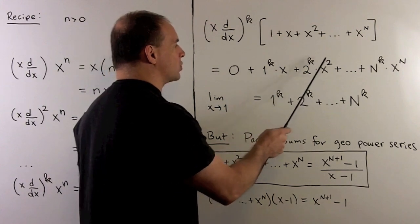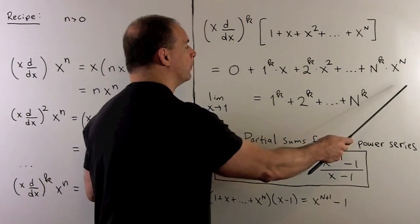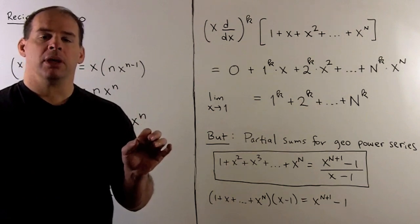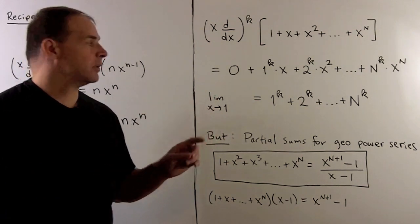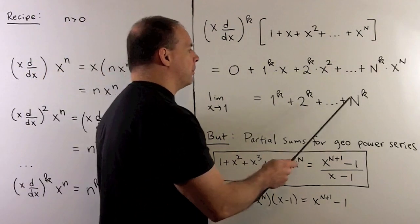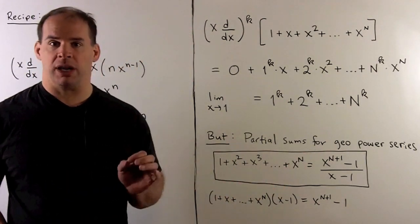Now to remove the x from the picture, we just take the limit as x goes to 1, which will be the same as an evaluation. So I get 1^k + 2^k + n^k, and that's the sum that we're interested in.